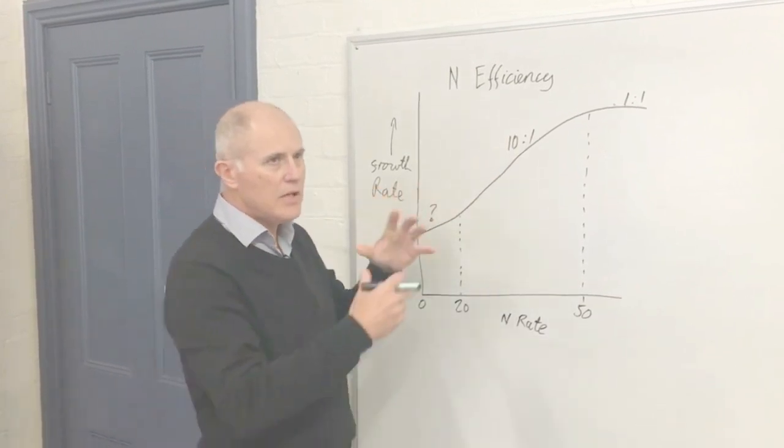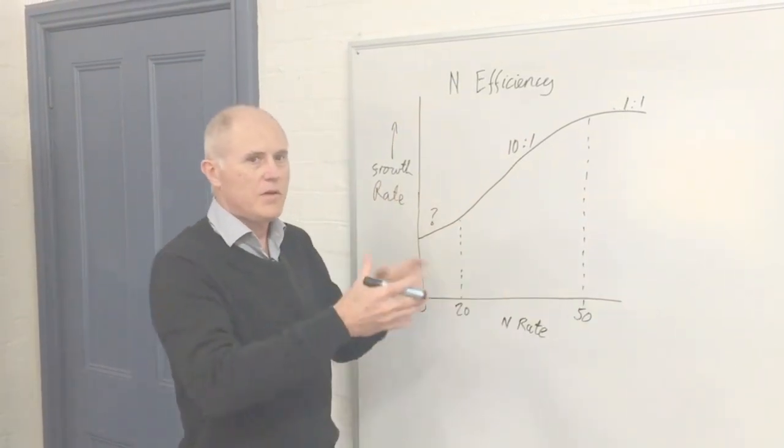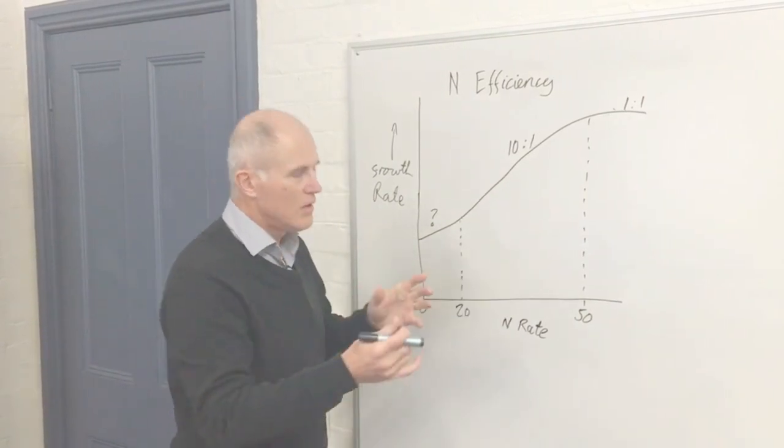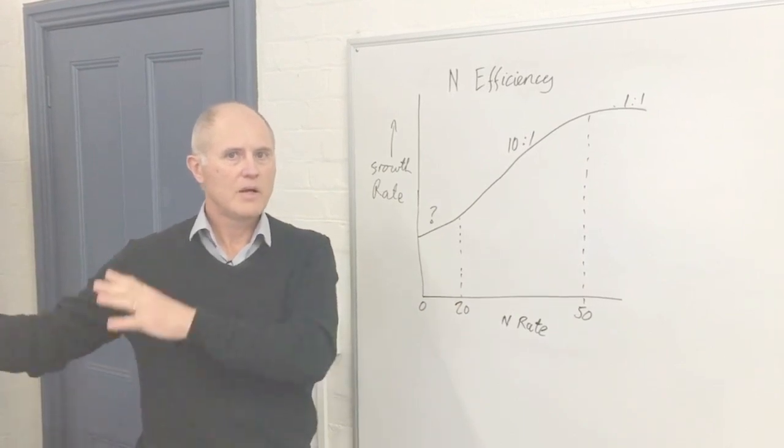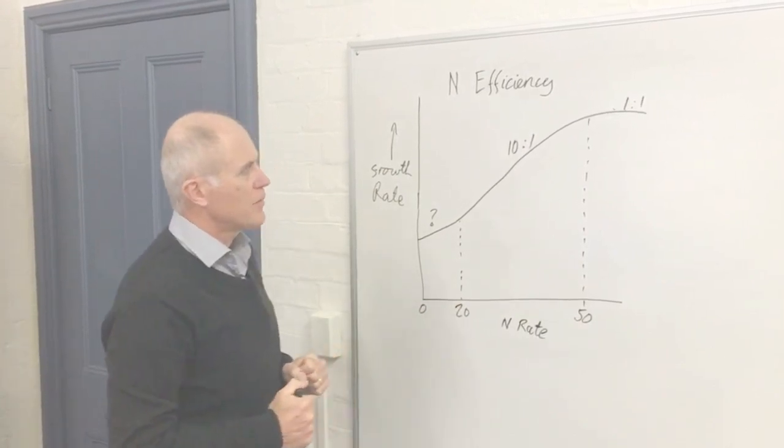The break-even is about 6 to 1, which means that if you're only getting 6 kilograms of extra dry matter for every one kilogram of nitrogen invested, often it's cheaper to feed your cows by buying grain, hay, silage, or some other product.